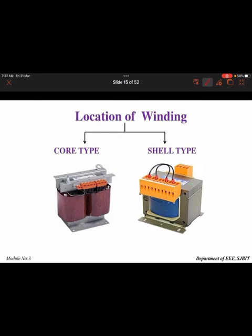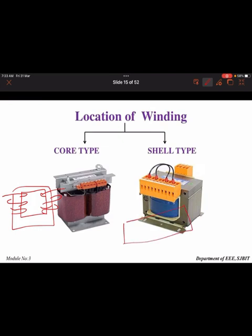Depending on the construction, transformers can be divided into core type and shell type, based on how the winding is placed. In the core type, the core is surrounded by the winding. In the shell type, the winding is placed inside and surrounded by the core. The core type has only one magnetic circuit path, while the shell type has two magnetic circuit paths. This is the main difference between core type and shell type.